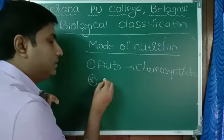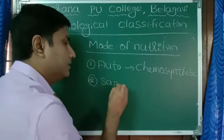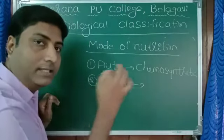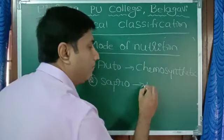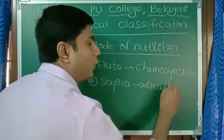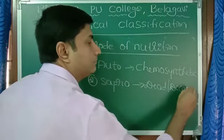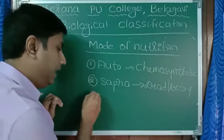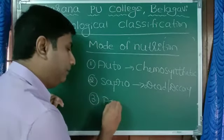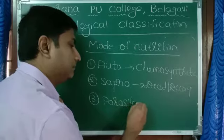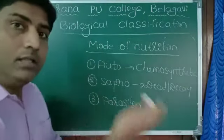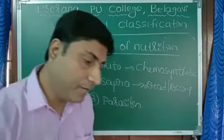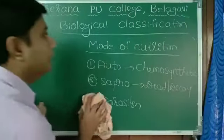Second one, some of them are saprotropes. Saprotropes means they derive their food from dead and decaying organisms. And some of them are parasites which depend on others for their food. Like this they have different modes of nutrition.